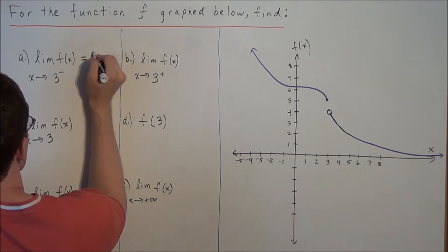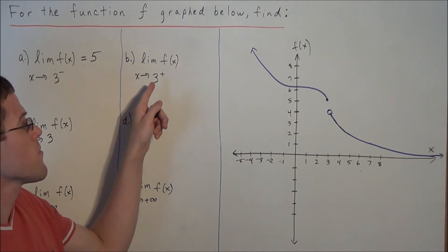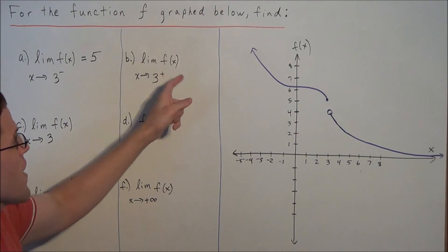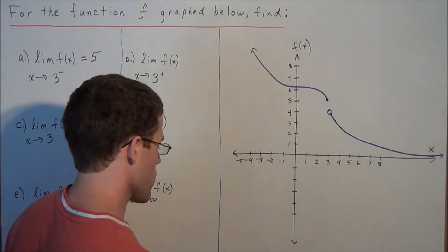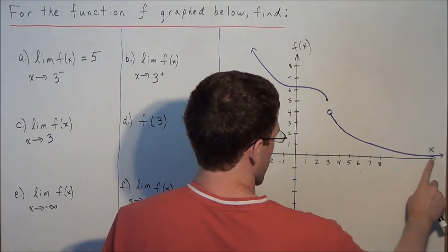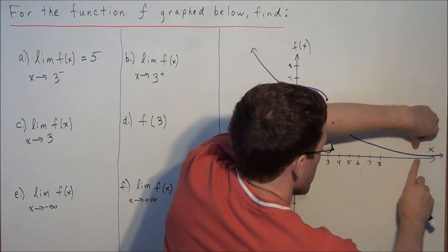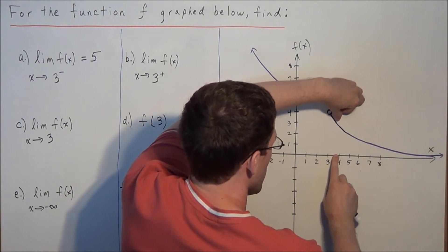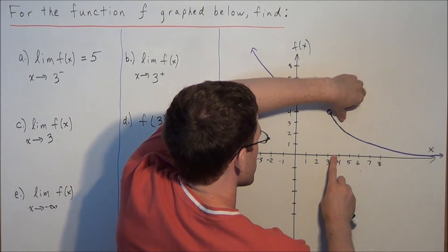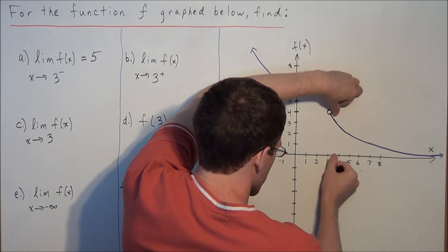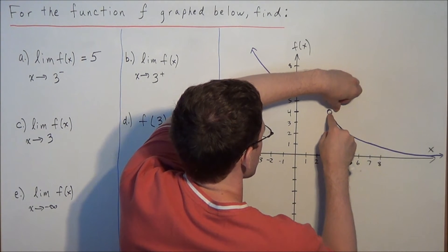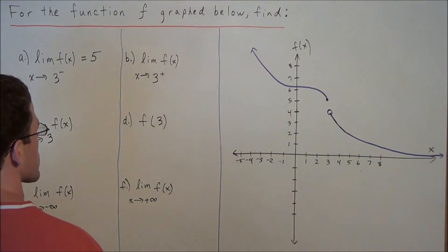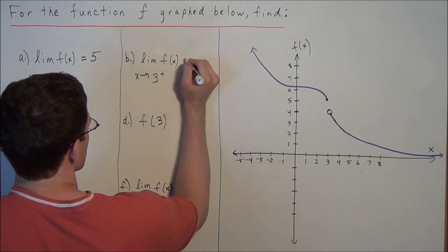Now we're going to do something very similar when we find the limit as x approaches 3 from the right side. This plus means we're approaching 3 from the right side. We trace the x-axis with our right hand and follow the function with our left hand, synchronizing the two. As we get closer and closer to positive 3 from the right side, the function is getting closer and closer to a value of 4 along the y-axis or f of x-axis. So the limit as x approaches 3 from the right of f of x is equal to positive 4.